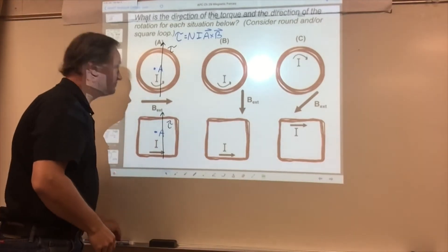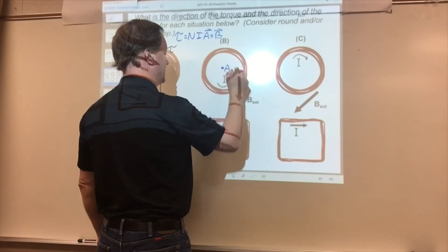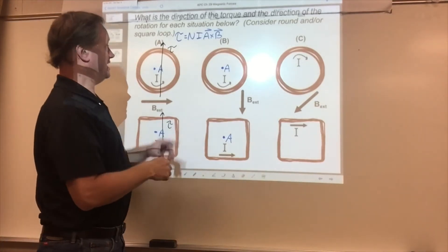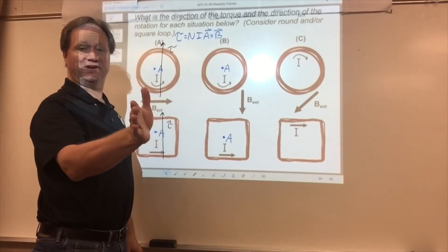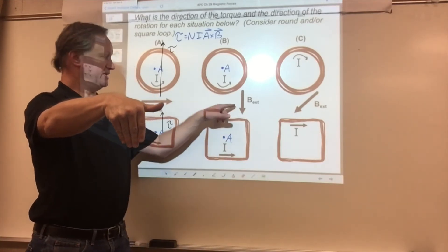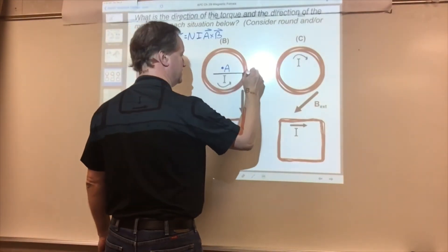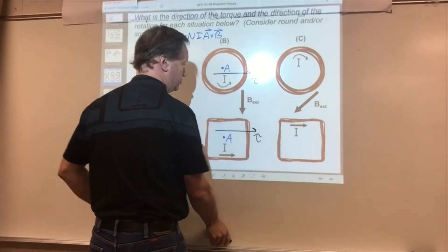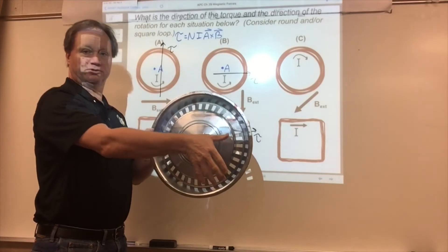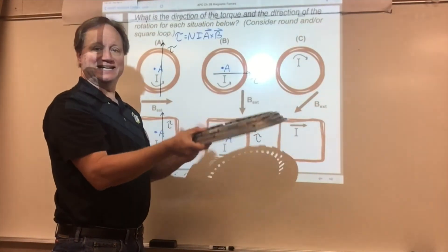Now, Part B. The current is flowing in the same direction, so our right-hand rule for the area vector gives us an area vector still coming out towards us. Now we do NiA cross B, so fingers point in the direction of A. I have to wrap to the direction of B, which means I'm going to have to twist my wrist so that I can rotate my fingers downward in the direction of B. So my thumb points over in that direction, meaning my torque vector is going to be over to the right. So I grab my loop — with the torque vector over to the right, my fingers push my loop to rotate in this fashion.